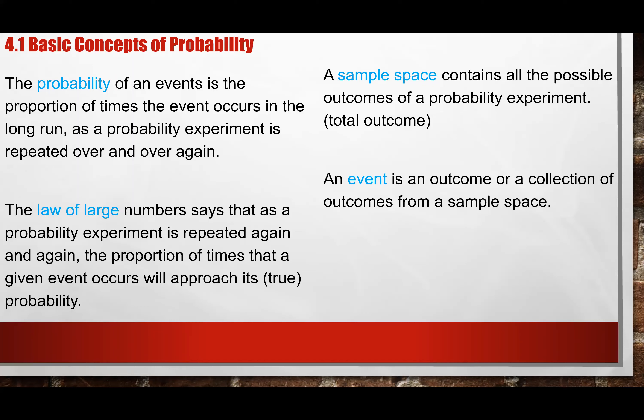The event is basically what we are looking for. If I flip a coin and I want the coin to land on heads, then my event is I want a head. So flip the coin is my experiment, the event I want is heads, and the sample space will be heads and tails. Those are just definitions to help us communicate.